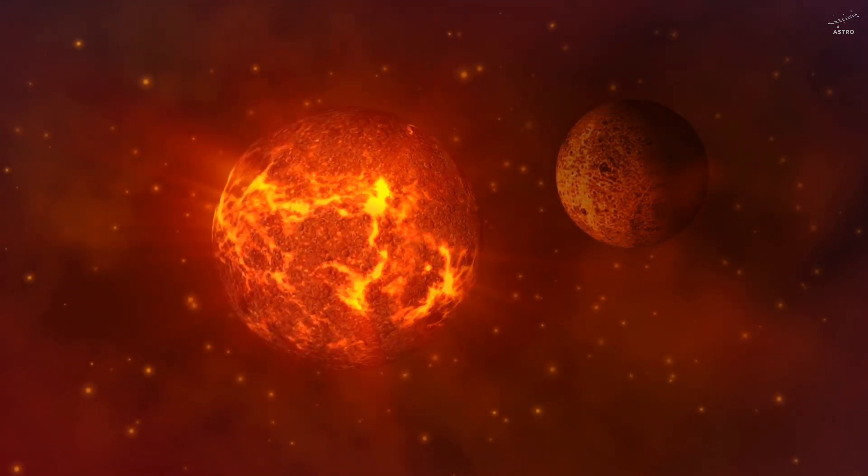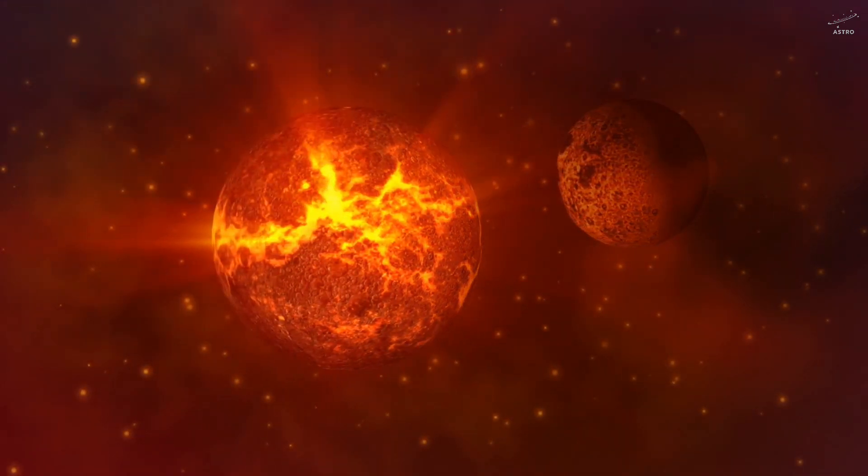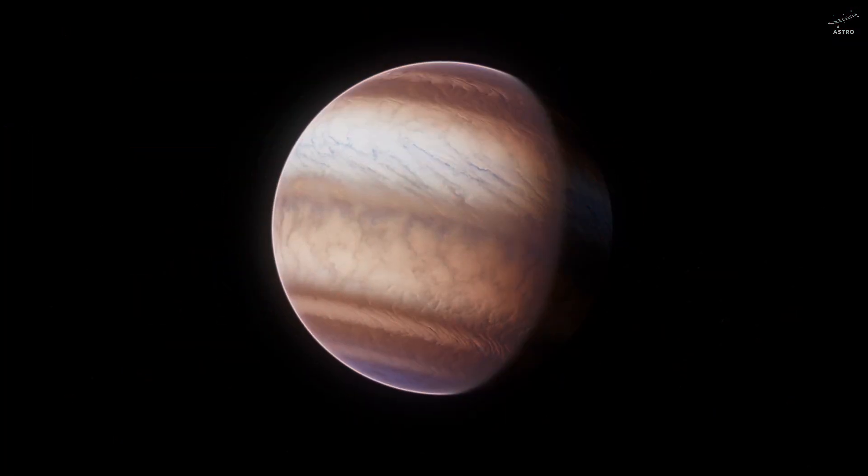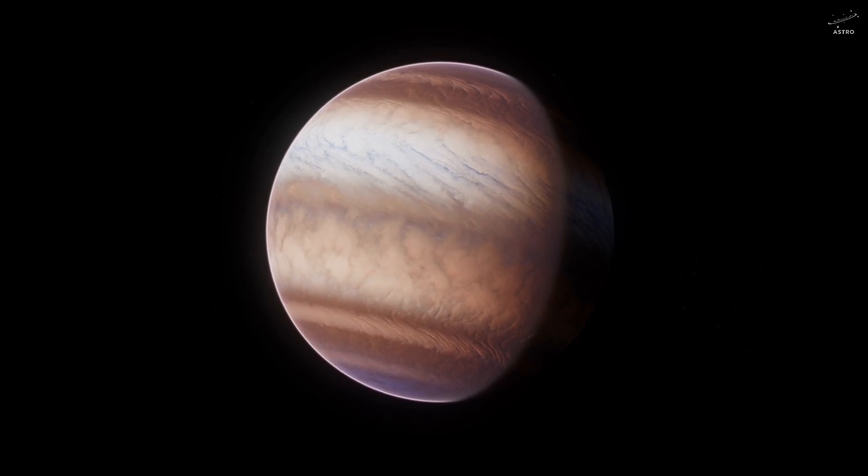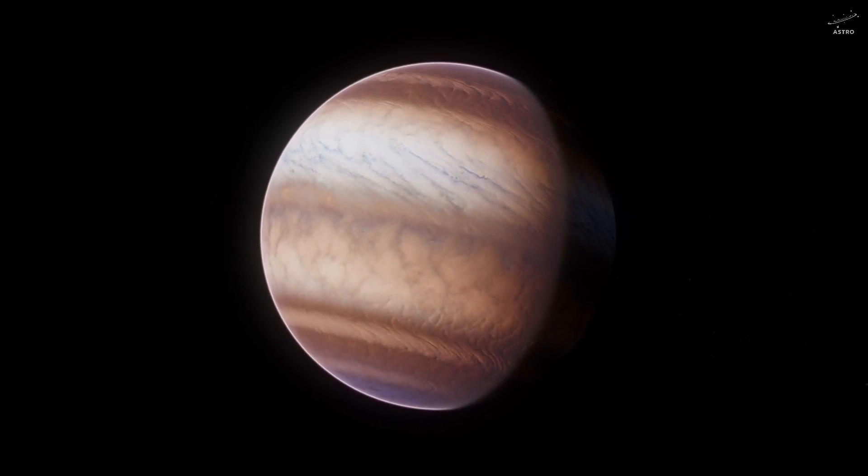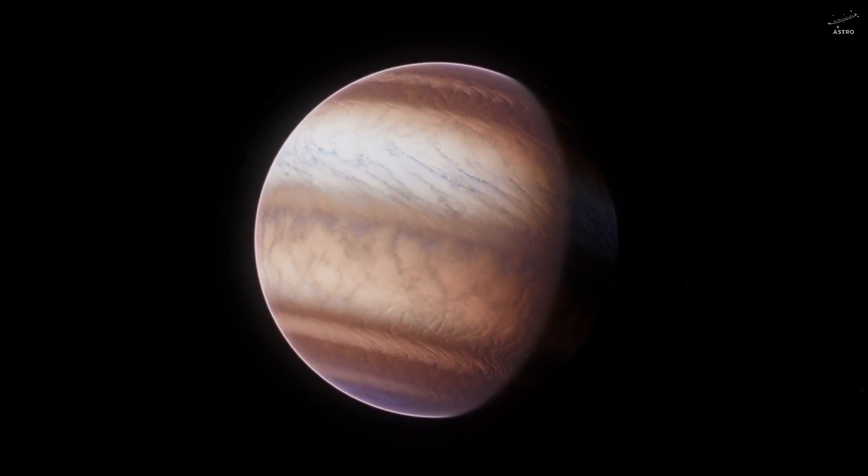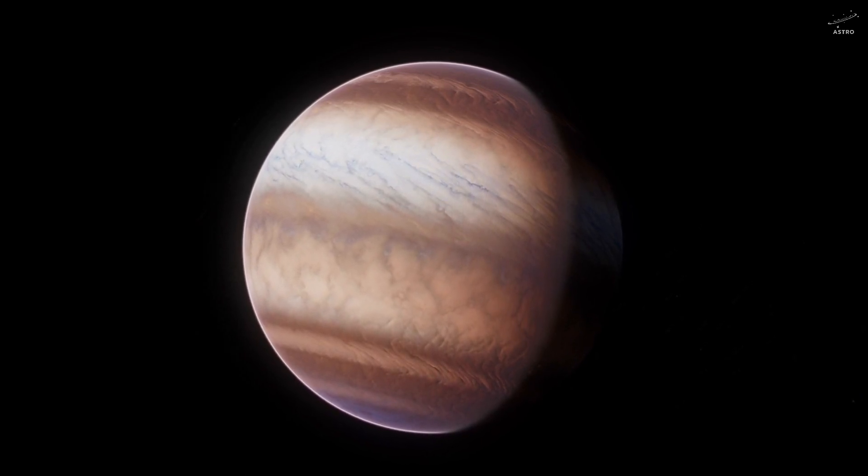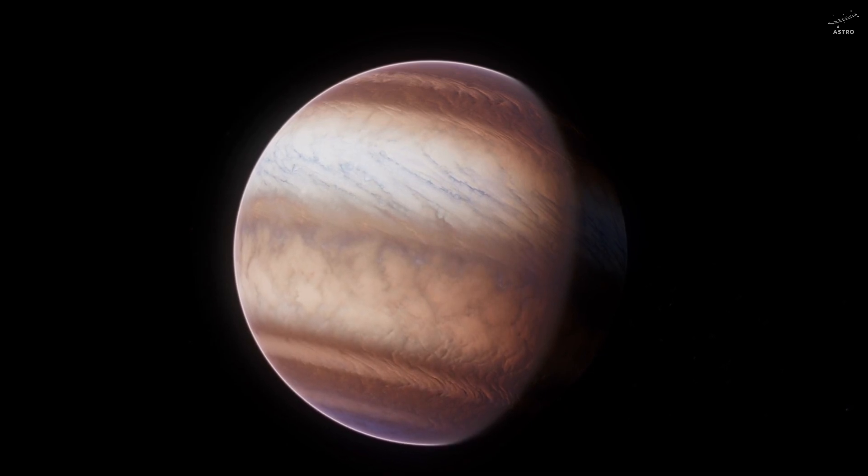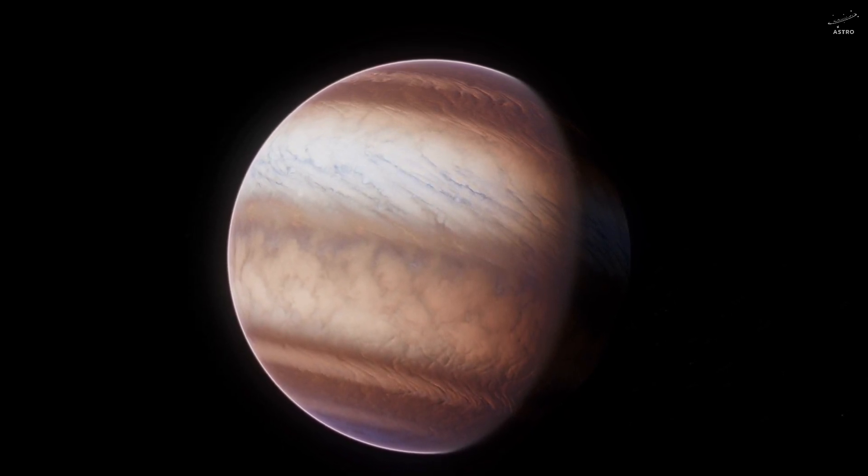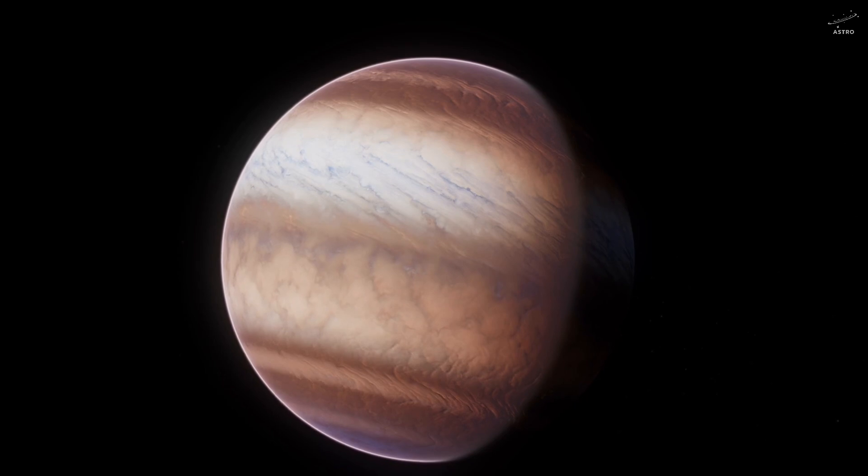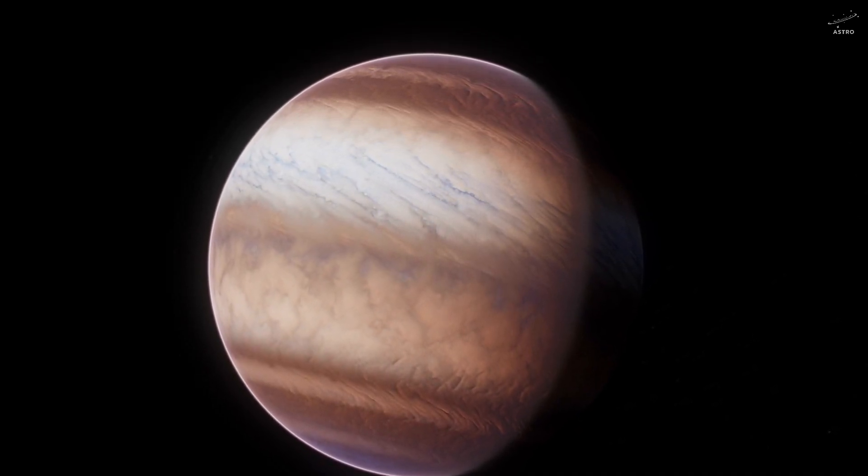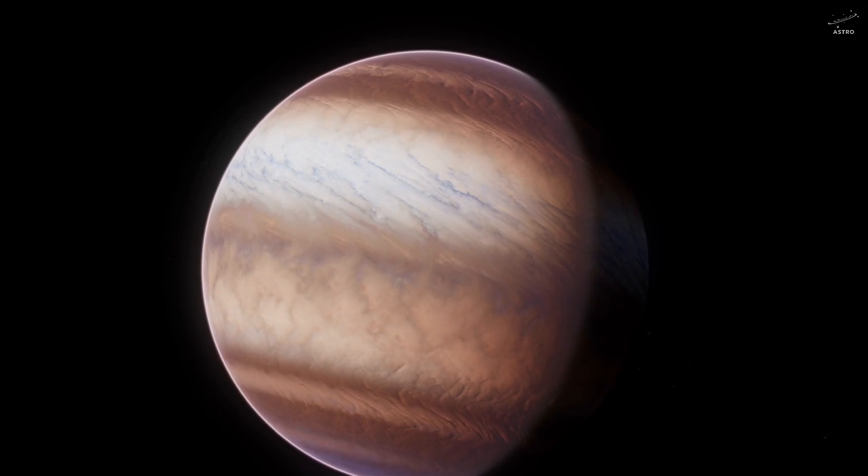And if you stood here on Earth, under a sky lit by two blazing stars, what would that feel like? Science isn't just numbers and formulas. It's the story of limits, of near-misses, of what almost was. And in Jupiter's story, we find a paradox. A failed star shaped like a sun, destined to remain a silent giant. Hold on to that thought, because next, we'll explore why our solar system formed with just one sun.